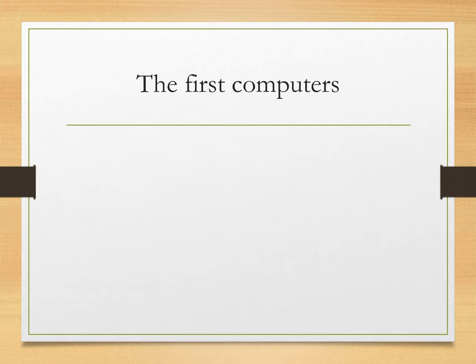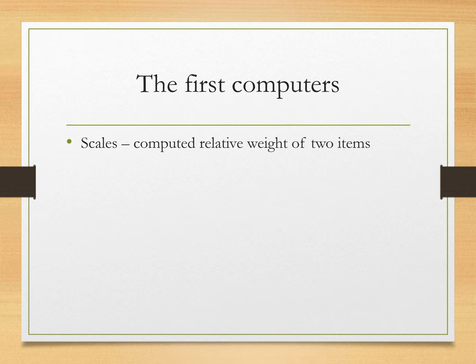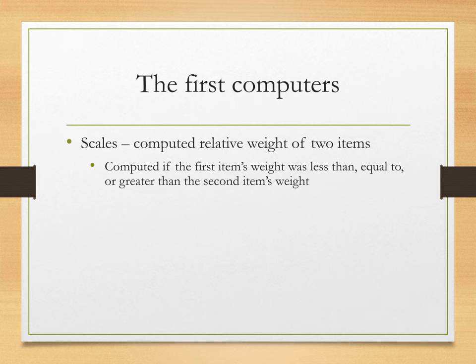Let's go ahead and take a look at what are considered to be the first computers. The first one is going to just be a scale — super basic. The idea is just to compute the relative weight of two items. It's the most basic form of computer you can have. The idea is just to see if the first item's weight is less than, equal to, or greater than the second item's weight.